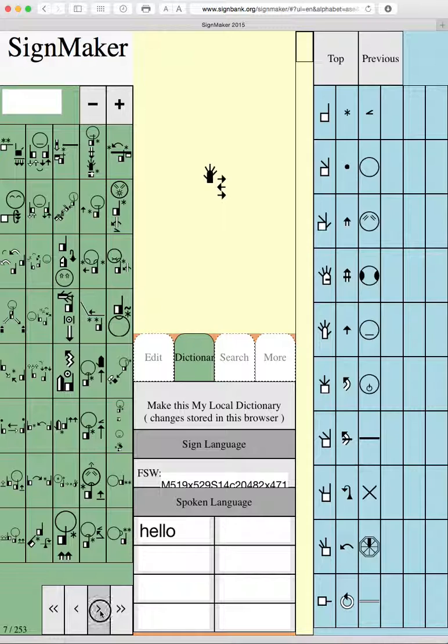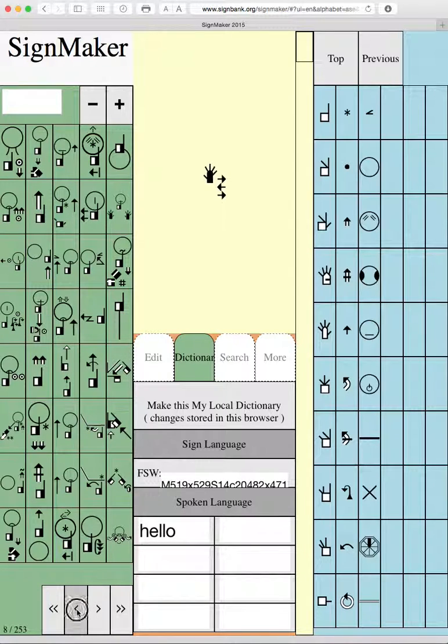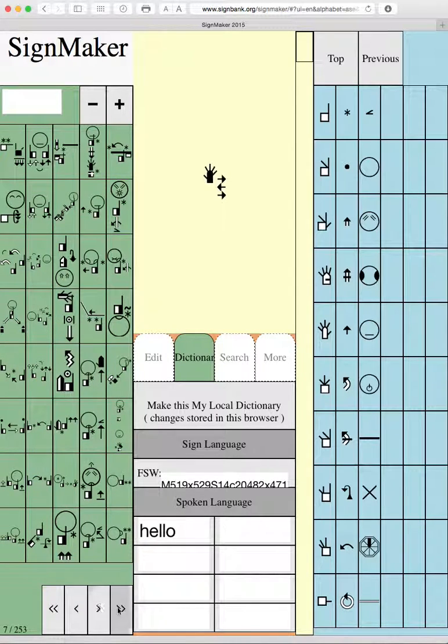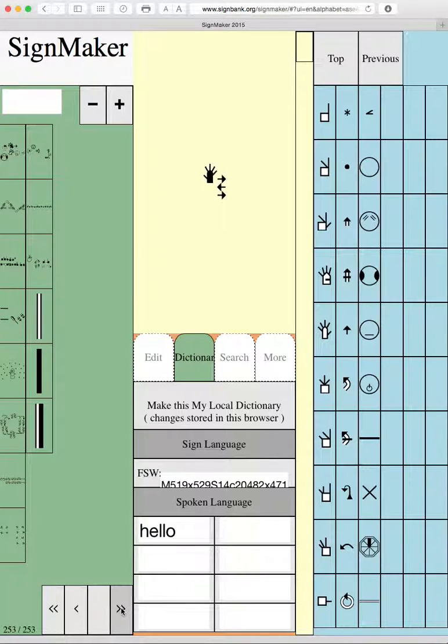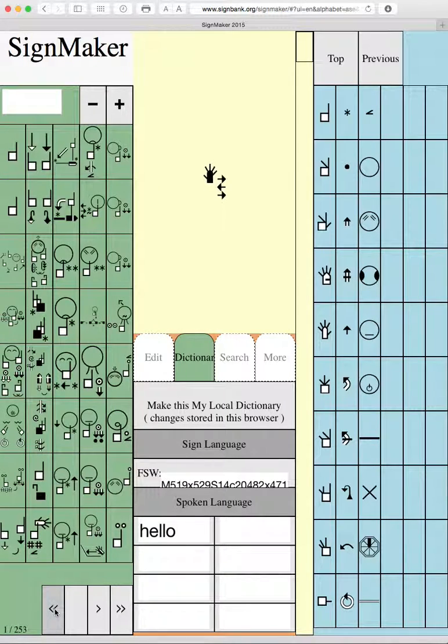There are around 8,000 signs in this dictionary. You can use the double arrows to go to the end of the dictionary or the double arrow the other way to go to the beginning. You might think these signs are way too crowded.